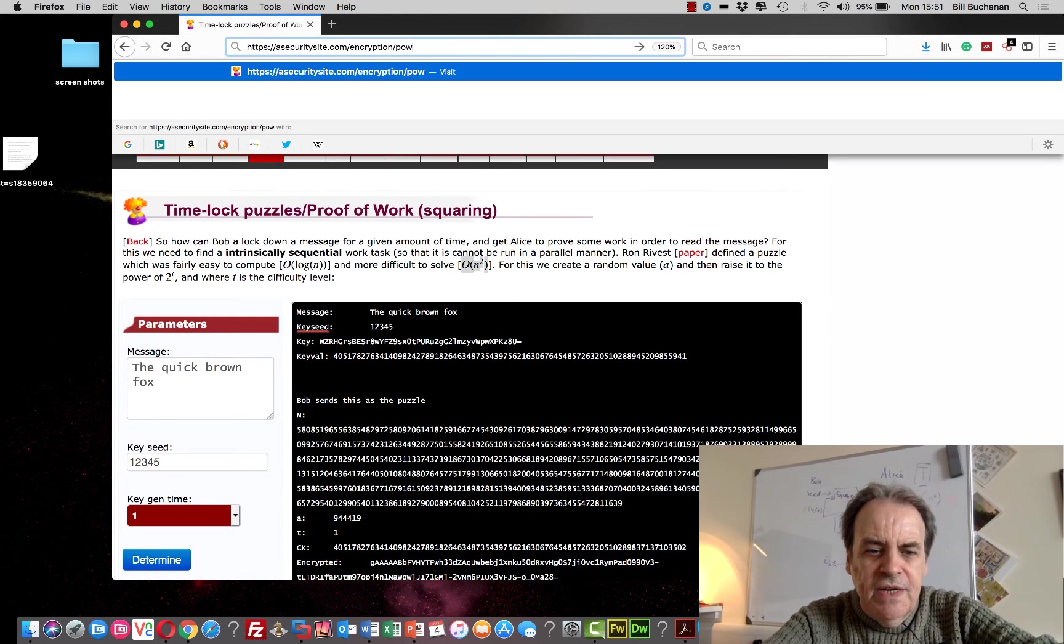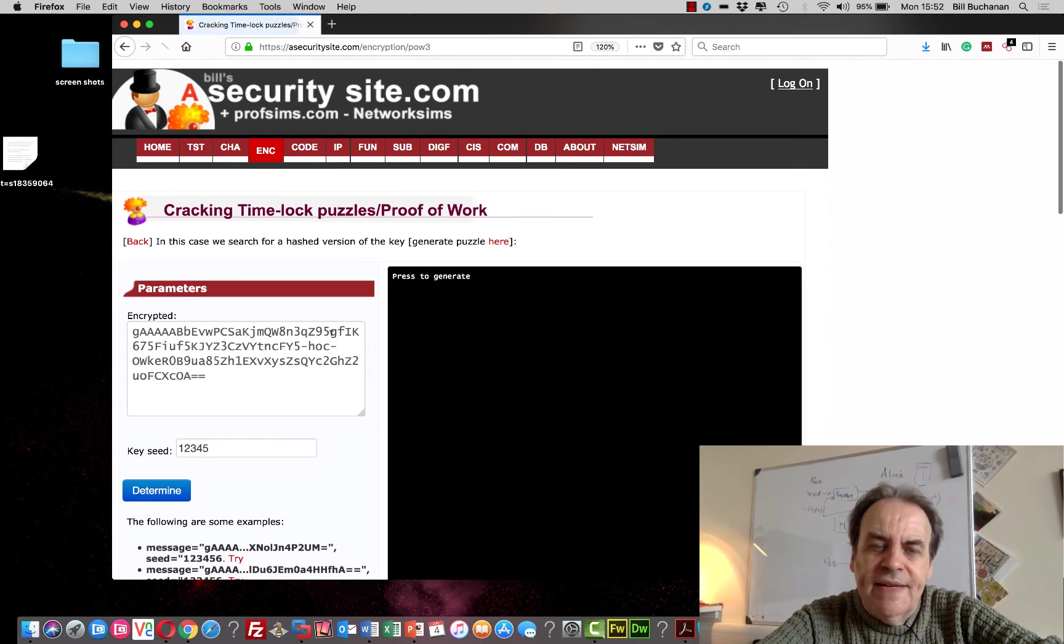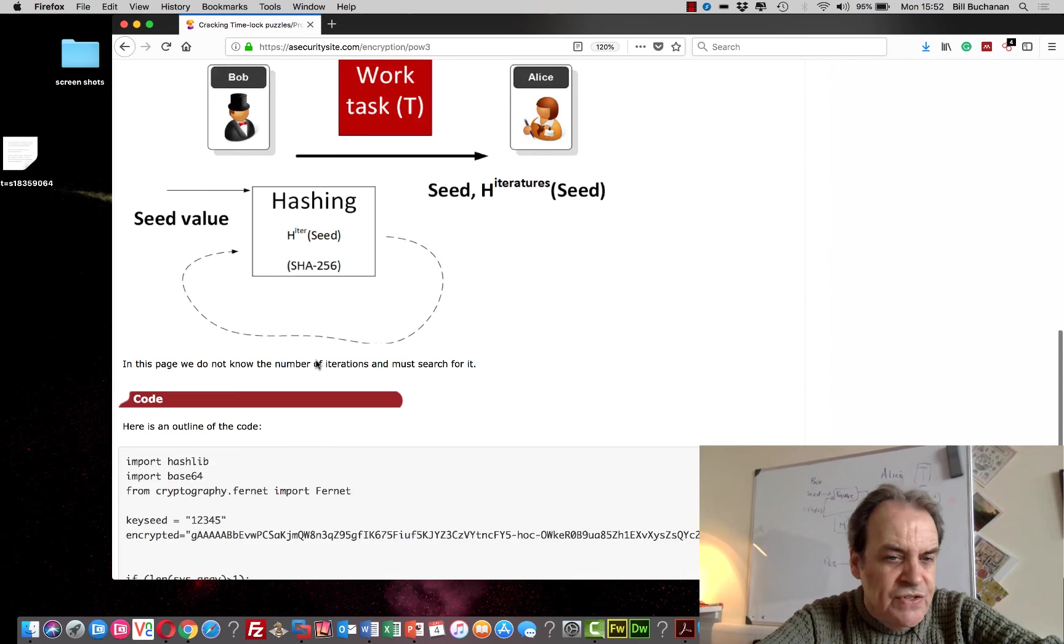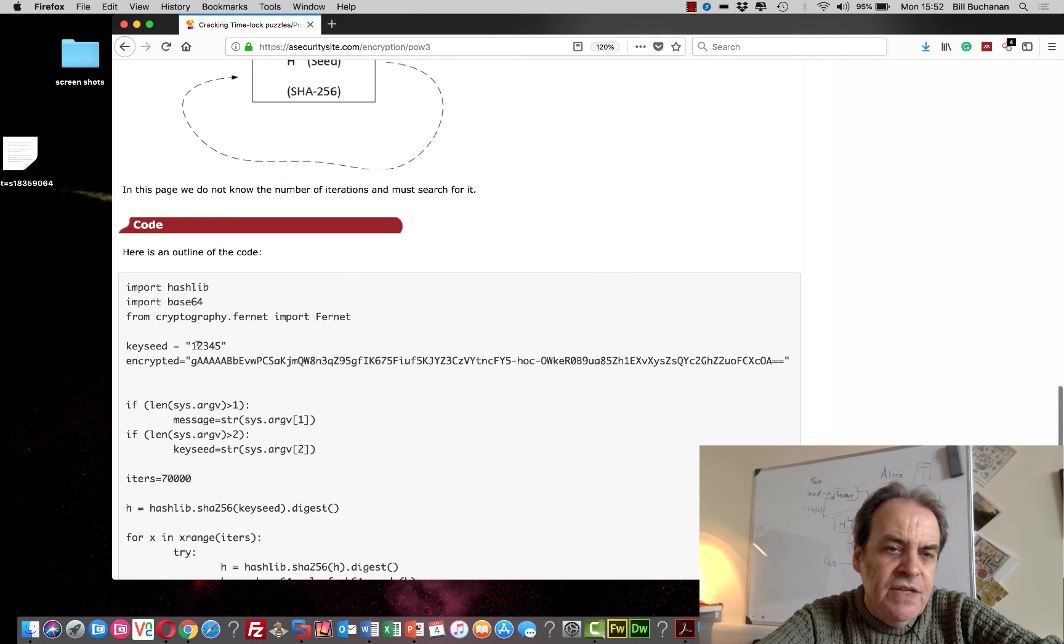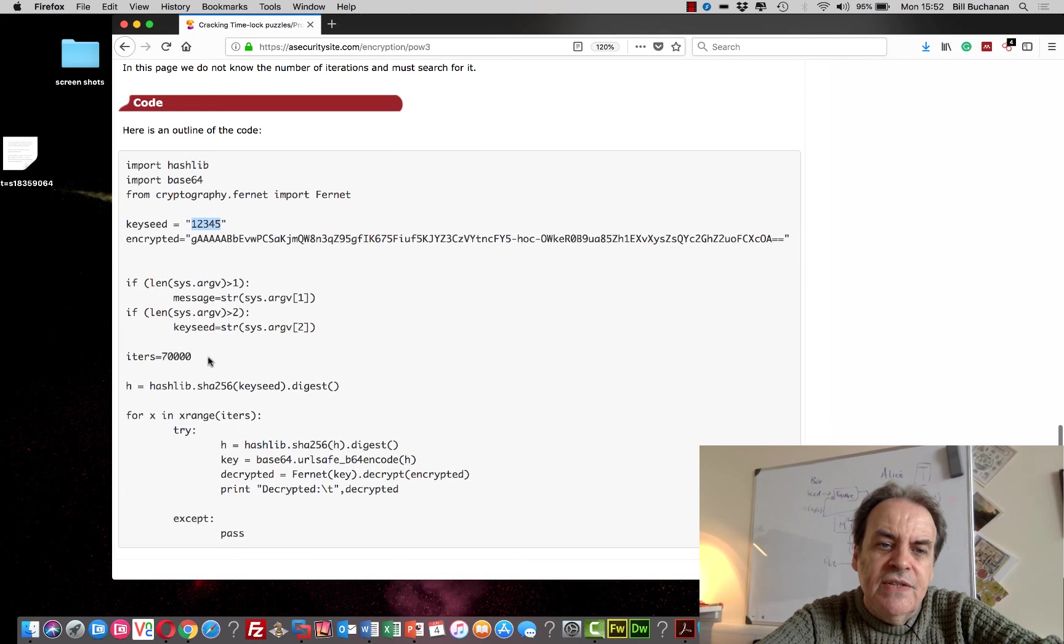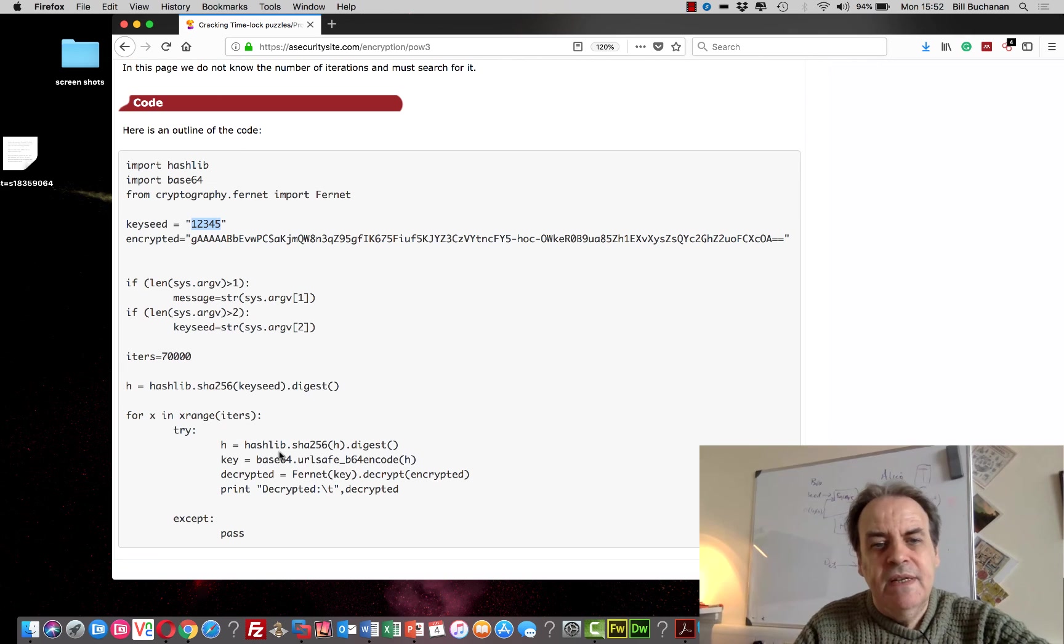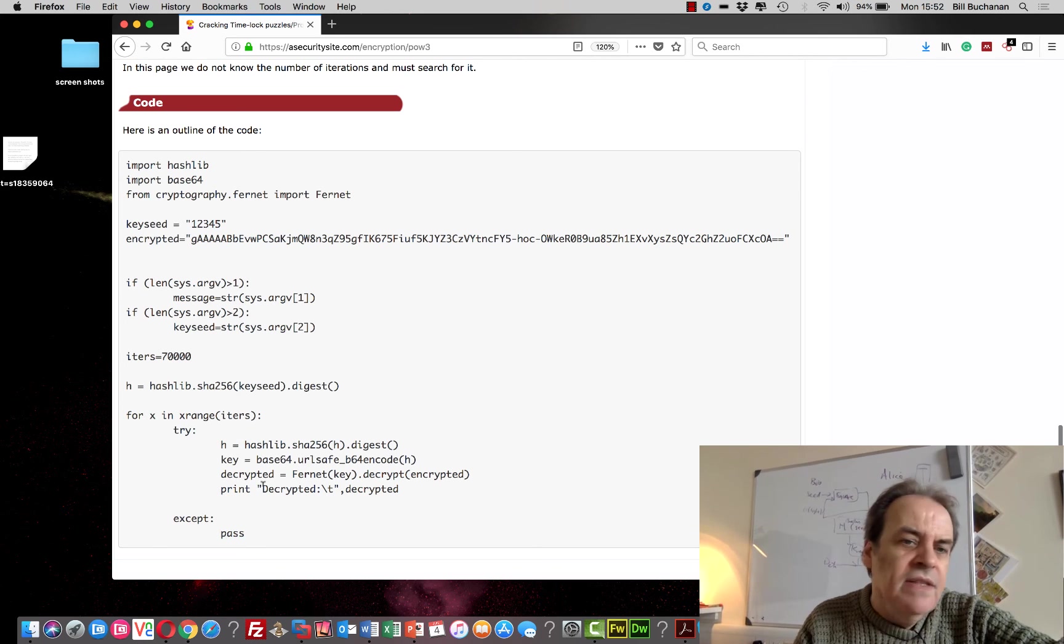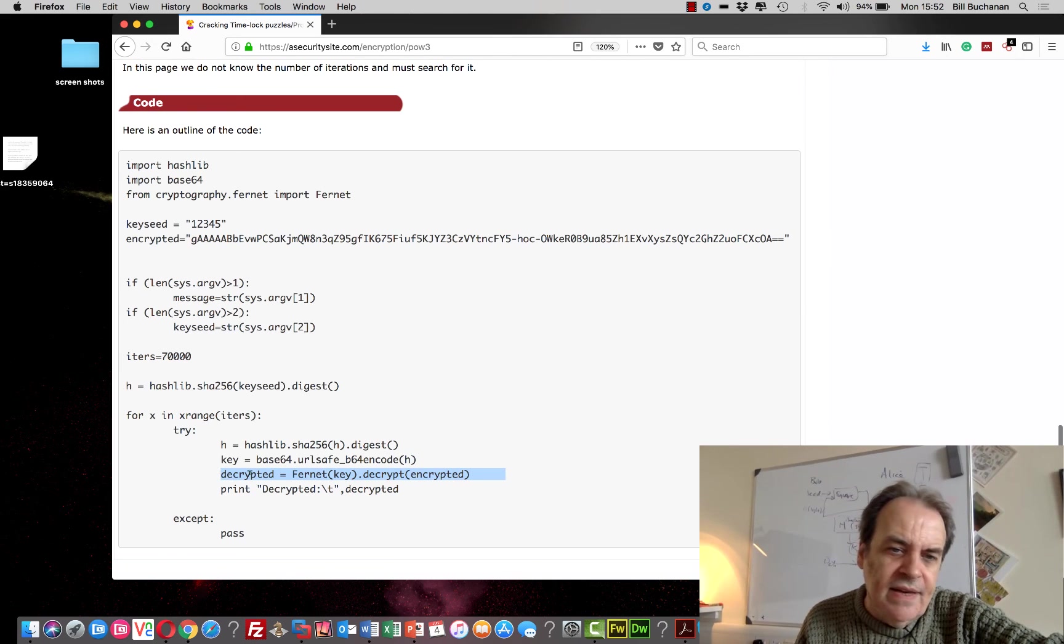Finally, I'll show you a little example of how we could crack the puzzle without actually knowing the number of iterations. In this way what we'll do is we'll take what the cipher is, and if we know what the seed is we'll go around a loop recalculating the hash value. Then we'll see if it raises an exception when we try to decrypt it. If it does we'll ignore it. If it doesn't, then we've actually found the key. It's the way we use to crack a key.